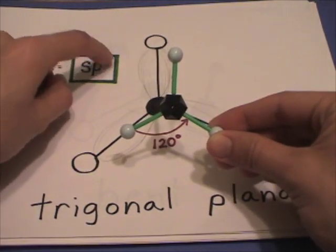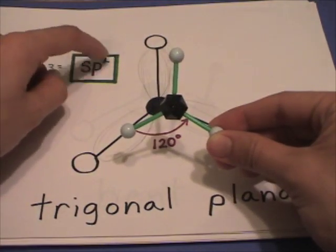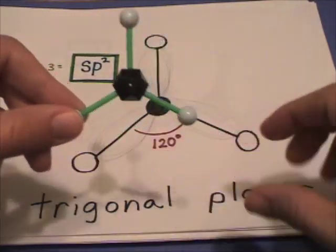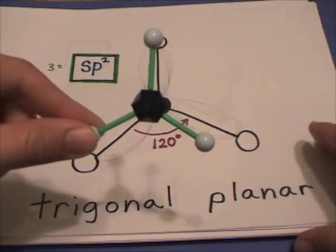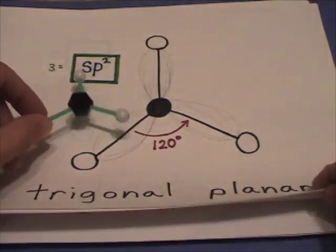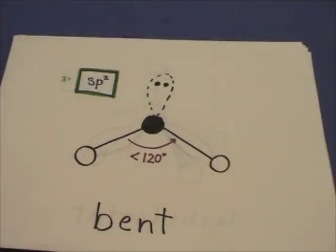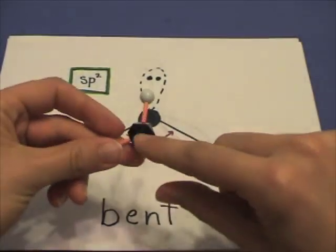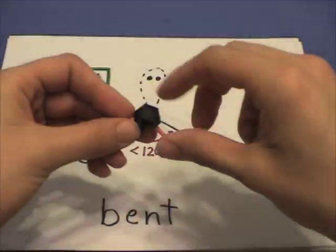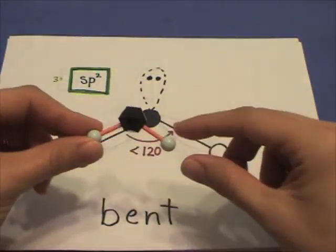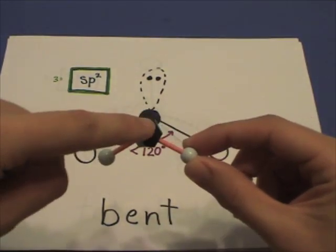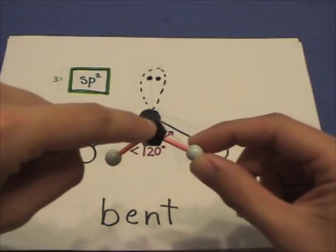S is one and there are two p's — three total — so this is sp2 hybridized with a 120 degree bond angle, trigonal planar. It's all on the same plane.